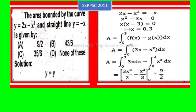Solution: here y equals y, it means 2x minus x squared equals minus x. Rearranging the terms, that is x squared minus 3x equals 0.